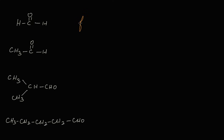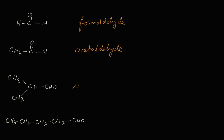The common name for the first structure is formaldehyde. The common name for the second structure is acetaldehyde. The third structure has a branch and four carbons in total, so it is isobutyraldehyde.